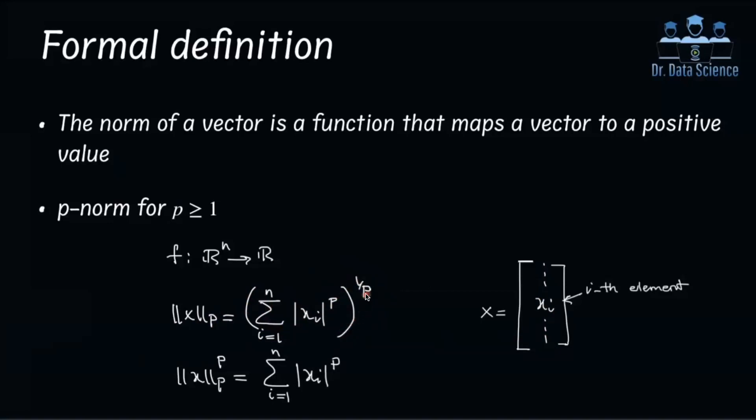Something that I personally like is to raise both sides to the power of P. So in this case, the norm of x with respect to P-norm raised to the power of P is equal to sum over all elements, x_i absolute values raised to the power of P. So this is an easier way to remember this formula that we have here, or this function.